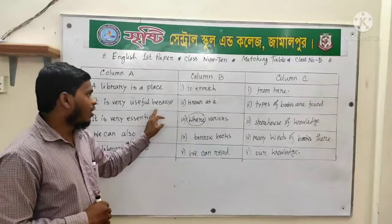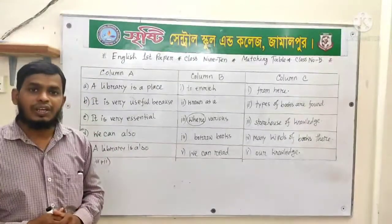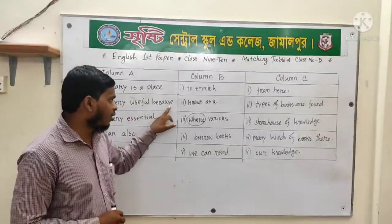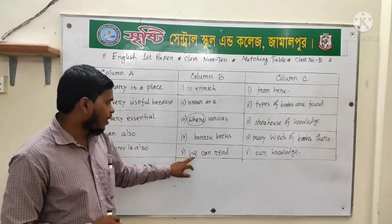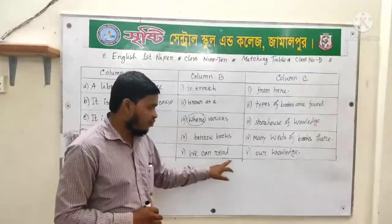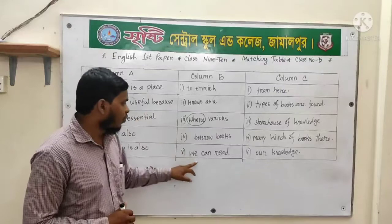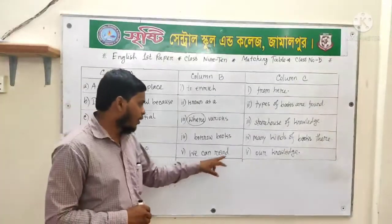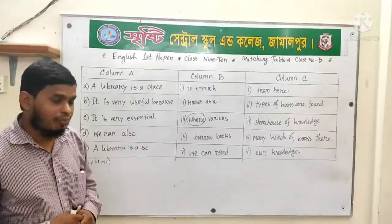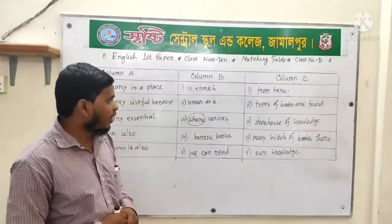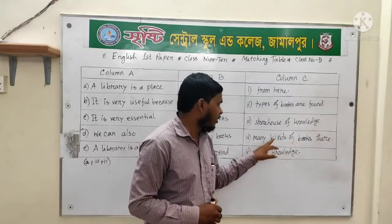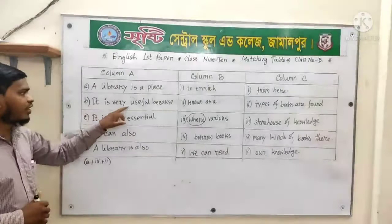After 'because' we have to find another subject and another finite verb. So the sentence becomes: 'It is very useful because we can read.' When you ask 'what we can read?' — we find an object. The object here is 'many kinds of books.' 'Many kinds of books' is a noun phrase. So the complete second sentence is: 'It is very useful because we can read many kinds of books there.'